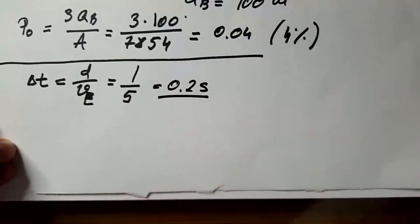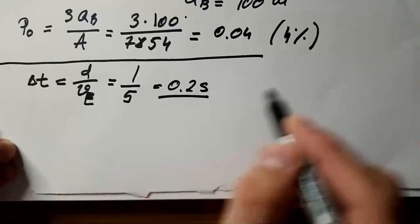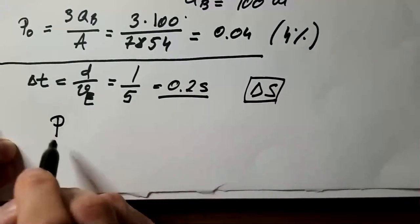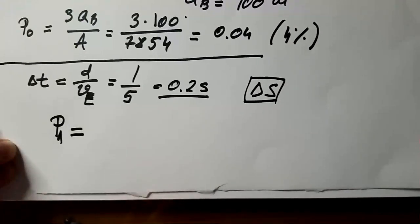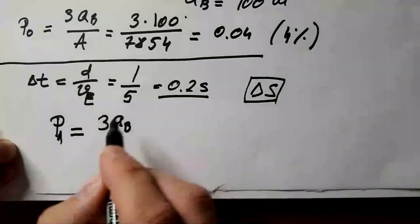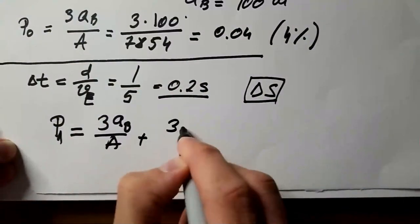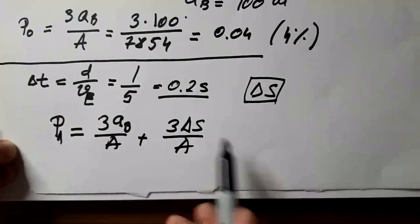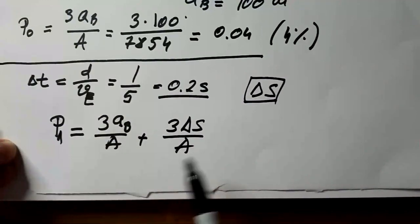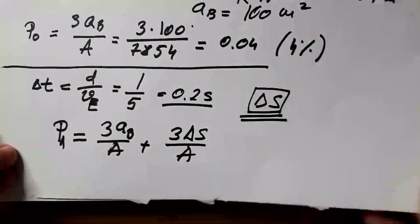Now, in the time delta t, blades will sweep an area delta s. Which means that probability p1, let's call it, that the bird will collide with rotating blade is 3ab divided by a, which is the same that we had in the initial case, plus 3 delta s divided by a, because I have three areas that are swept due to rotation. So, 3 delta s compared to the overall area. Now, if we find this delta s, then our problem is complete.